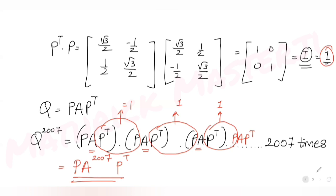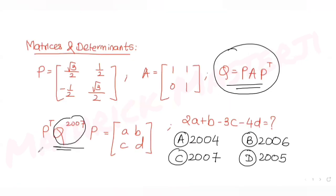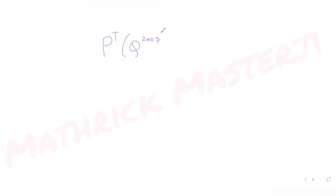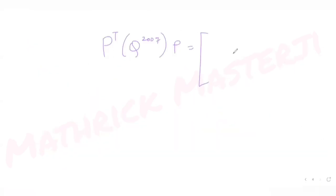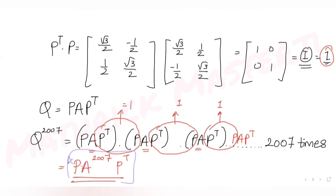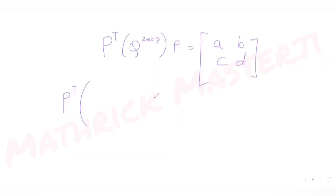The question tells us Pᵀ·Q^2007·P = [a,b; c,d]. Substituting Q^2007 = P·A^2007·Pᵀ, we get Pᵀ·P·A^2007·Pᵀ·P = A^2007. Since Pᵀ·P = I, this simplifies to A^2007 = [a,b; c,d].